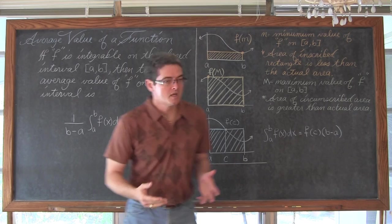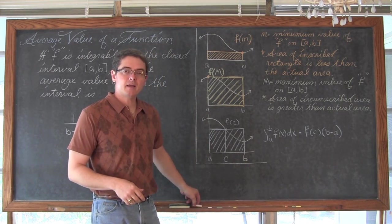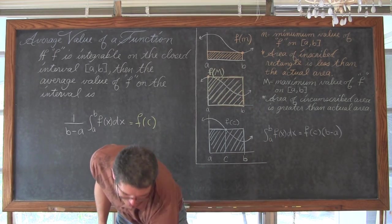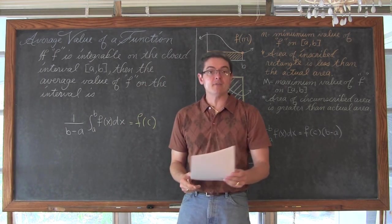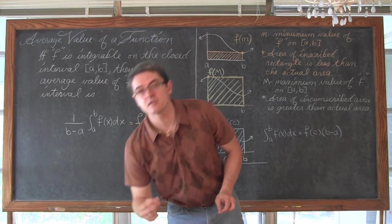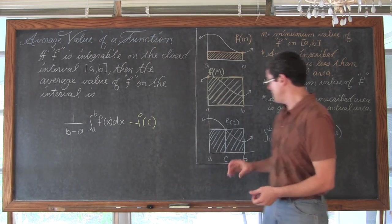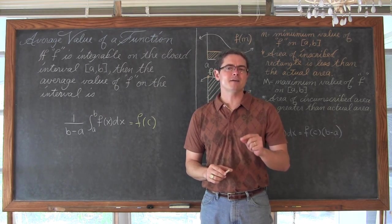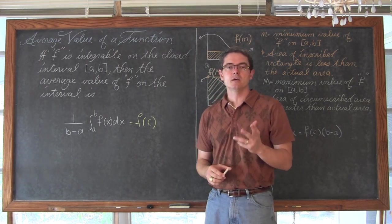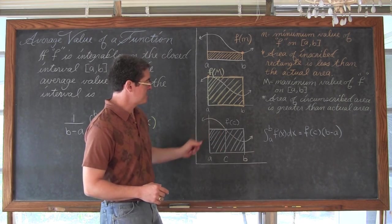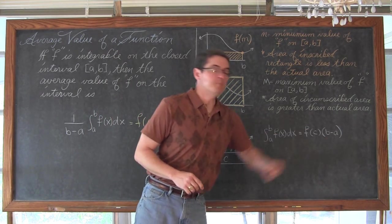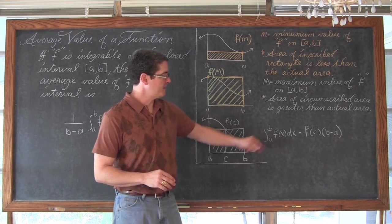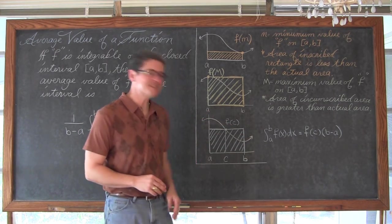So what we are going to do is get this board erased, I am going to put up a problem, and we are going to first find the average value of a function and then use that average value, the height of that rectangle, to then go back and find what is that value of c that guarantees that f of c times b-a does actually equal the value of the definite integral from a to b. Let's get to it.